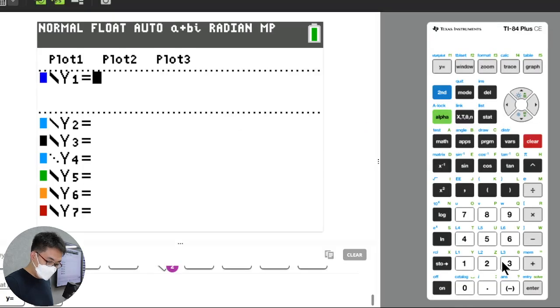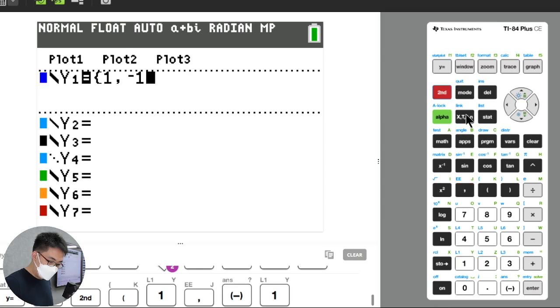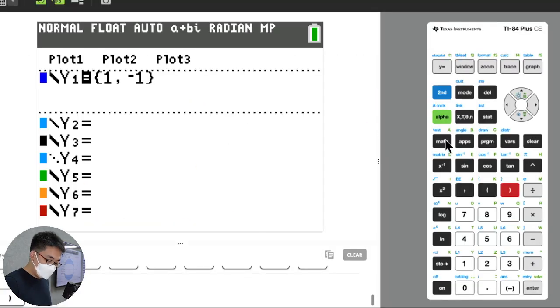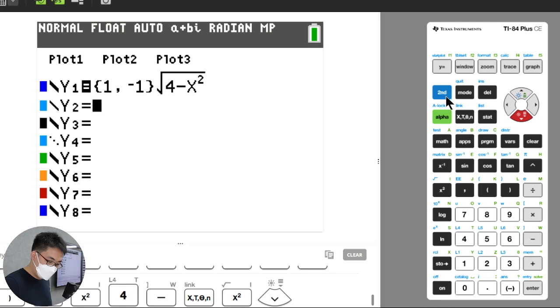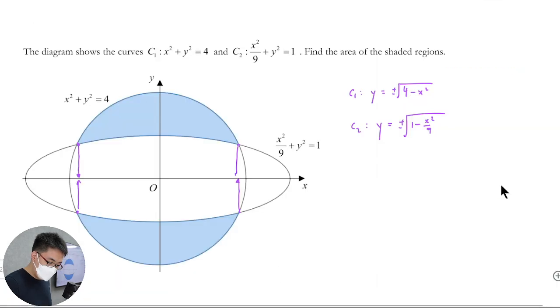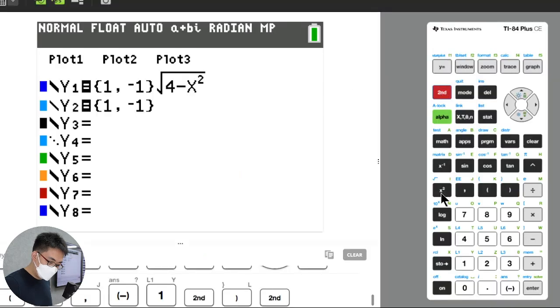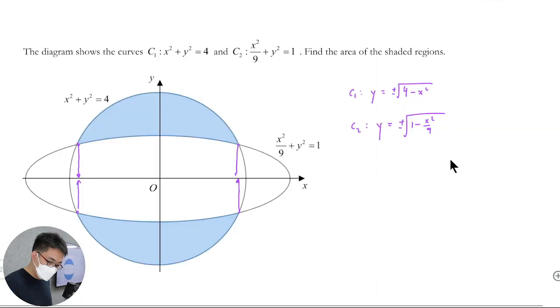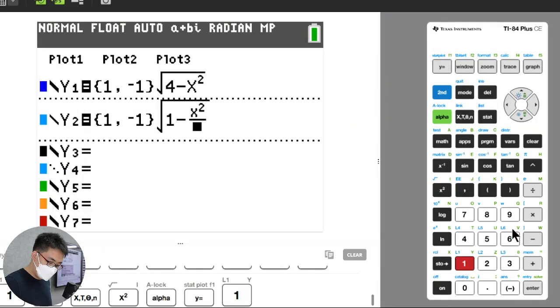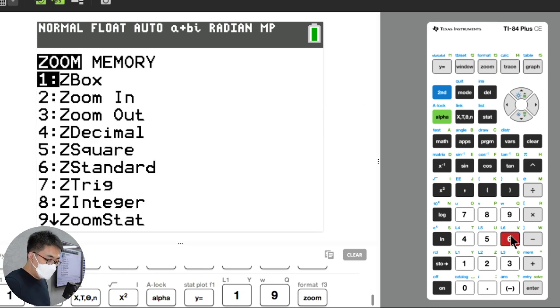So this is plus minus, so you just put curly bracket 1 comma negative 1, pointy bracket sorry, then square root 4 minus x squared. Then I've got the subsequent one, 1 comma negative 1, and then you have square root 1 minus x squared over 9. And then we issue zoom 6, zoom center there, you get this graph here.